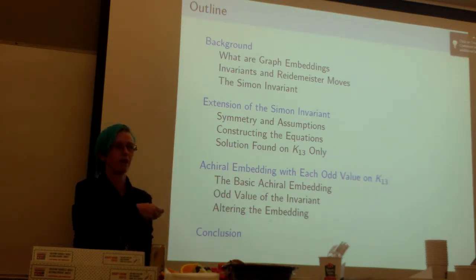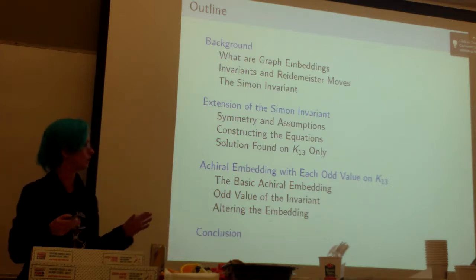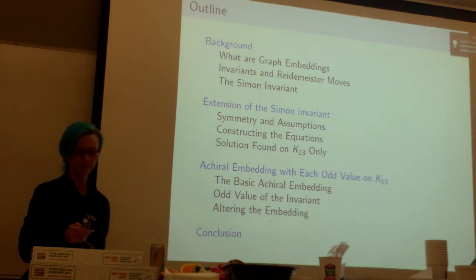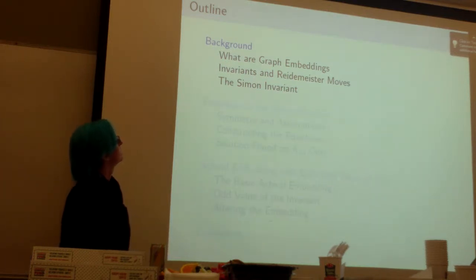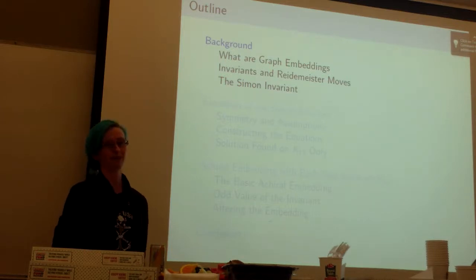After that I'm going to take the one where it did work, the complete graph on 13 vertices, and show how you can create an achiral embedding of this graph with every possible odd value of this invariant. So let's begin with what in the world am I talking about.